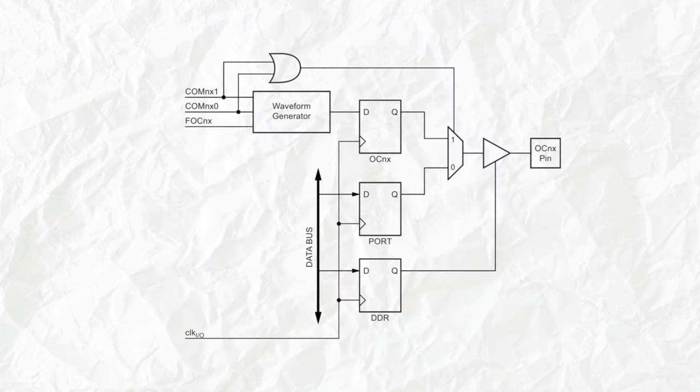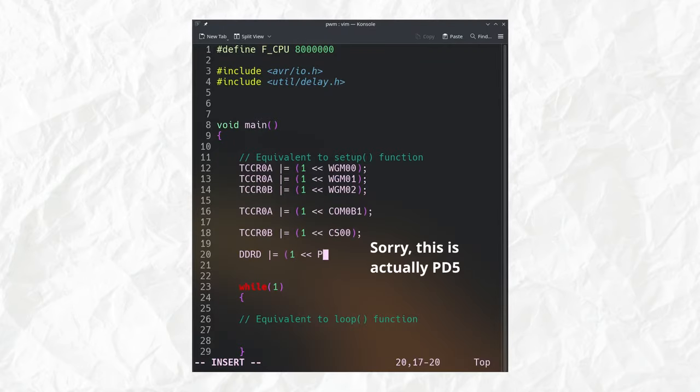The last thing to do is to set our pin as an output so that we can use it to drive whatever we want. I'm going to do this with the data direction register or you can just use a pin mode function in the Arduino IDE.